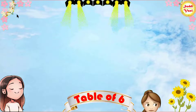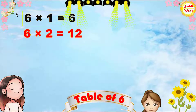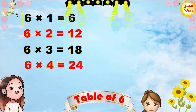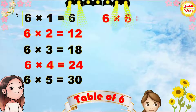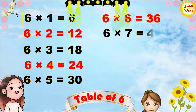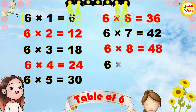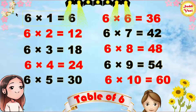Once again: 6 1s are 6, 6 2s are 12, 6 3s are 18, 6 4s are 24, 6 5s are 30, 6 6s are 36, 6 7s are 42, 6 8s are 48, 6 9s are 54, 6 10s are 60.